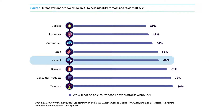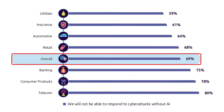Several studies have looked at how much businesses are using AI and how much they will use it in the future. One study, broken down by industry type — including utilities, insurance, automotive, retail, consumer products, and telecom — asked whether organizations are counting on AI to help identify threats and thwart attacks. Overall, 69% of surveyed organizations said they will not be able to respond to cyber attacks without artificial intelligence, ranging from a low of 59% in utilities to a high of 80% in telecom. This clearly suggests AI will be very important for improving cybersecurity across all sectors.